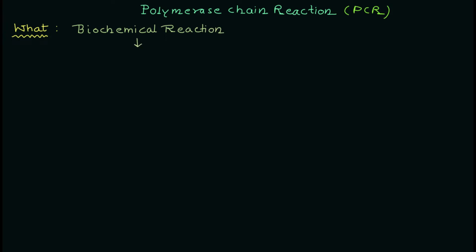So what is PCR? PCR is basically a biochemical reaction, and the significance of this reaction is to selectively amplify a DNA region. Two important points: first, it is a biochemical reaction, and second, it is the selective amplification of a DNA region. Biochemical means there are biological and chemical molecules associated with it.